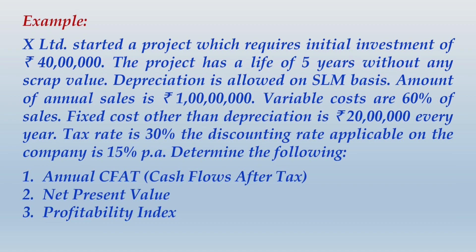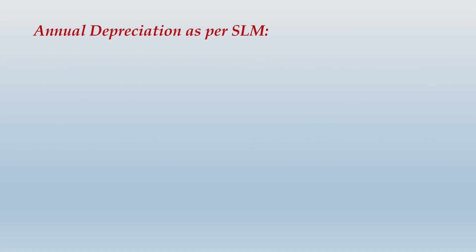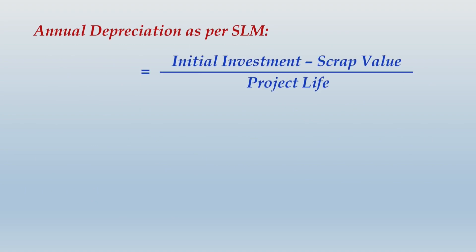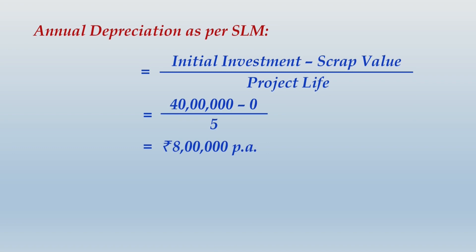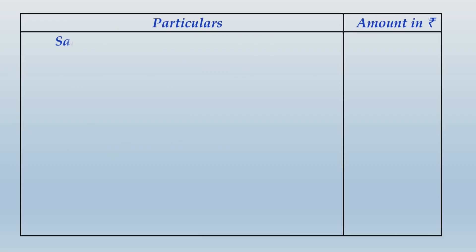First, compute the annual depreciation as per the straight line method: initial investment minus scrap value divided by project life = 40 lakhs minus zero divided by 5 years = rupees 8 lakhs per annum. Once you have the annual depreciation, you are ready to calculate annual cash flows after tax.